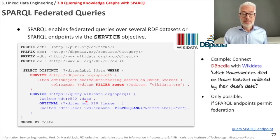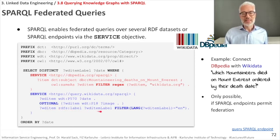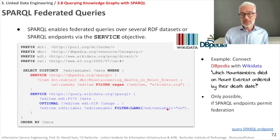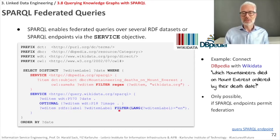Then the blue part for Wikidata: we look for the variable WDItem and say it should have a death date. Optionally, we also want an image. And we want the label of that person — the readable name in English. The other SERVICE directive for labels won't work in a federated query, so instead we simply look for the RDFS label of the person and filter it for English.